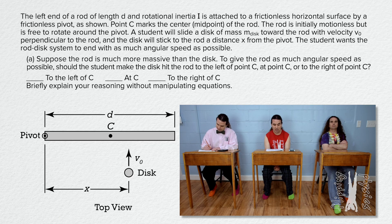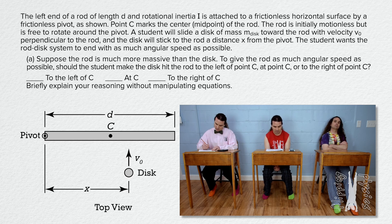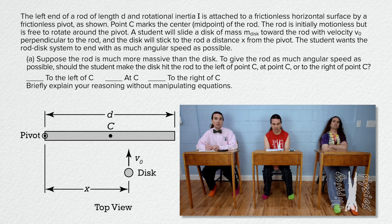The left end of a rod of length D and rotational inertia I is attached to a frictionless horizontal surface by a frictionless pivot as shown. Point C marks the center of the rod. The rod is initially motionless but is free to rotate around the pivot. A student will slide a disk of mass m-sub-disk toward the rod with velocity v-naught perpendicular to the rod, and the disk will stick to the rod a distance x from the pivot.